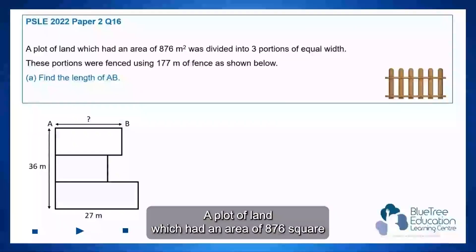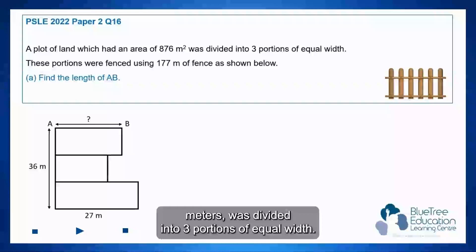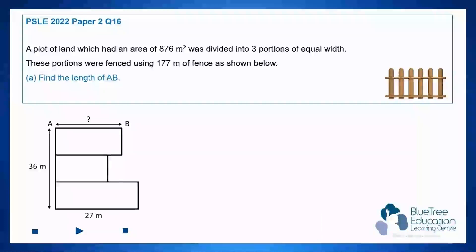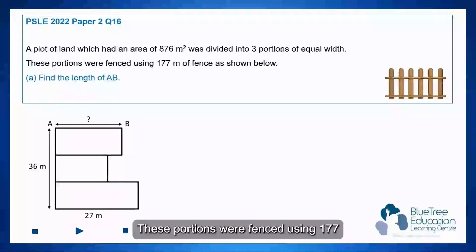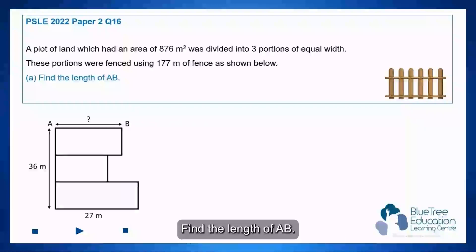A plot of land which had an area of 876 square meters was divided into three portions of equal width. These portions were fenced using 177 meters of fence as shown by the lines. Find the length of AB.